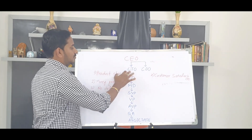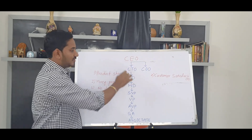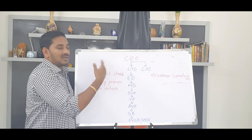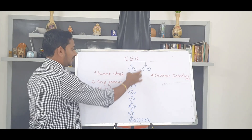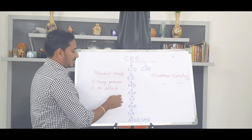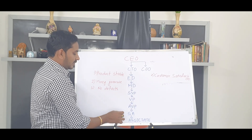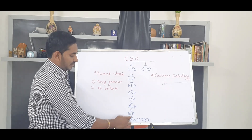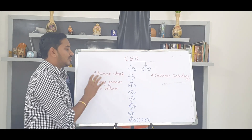You have a CEO, a Chief Technology Officer, a Chief Operations Officer, a Chief Financial Officer. For example: CTO, Executive Director, MD (Managing Director), Senior Vice President, Vice President, Associate Vice President, Senior Associate. This is a different structure — a hierarchy.